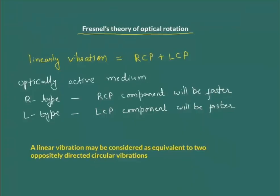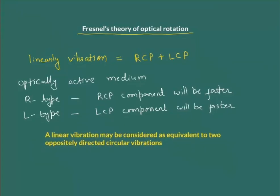To summarize, Fresnel's idea was that a linear vibration, when it travels inside an optically active medium, splits up into two components: RCP and LCP. The R-type medium allows R to be faster than L, and vice versa. As they travel, an extra phase difference is introduced because R and L move at different speeds. Because they are still LCP and RCP but now with a different phase difference, they emerge in a state of polarization shifted relative to the original.